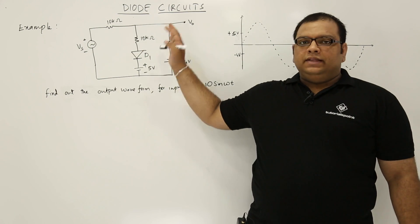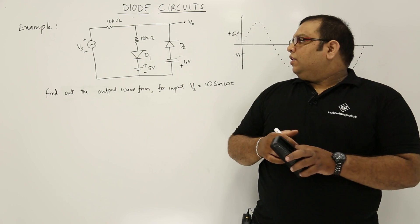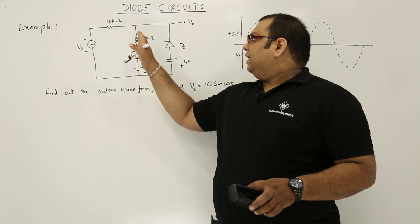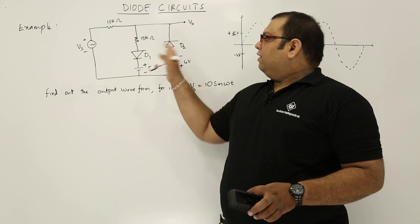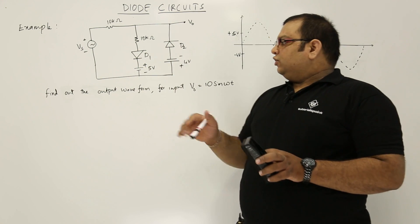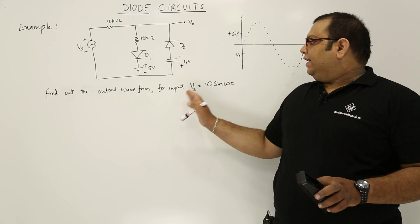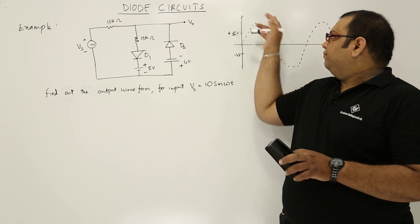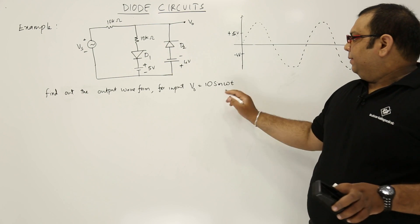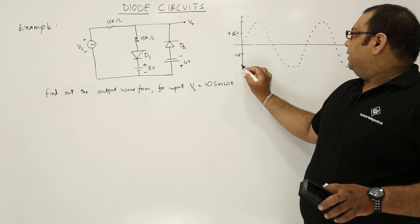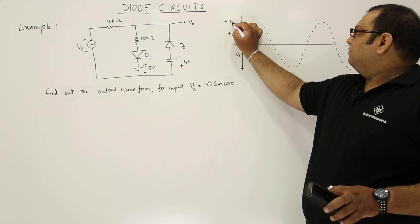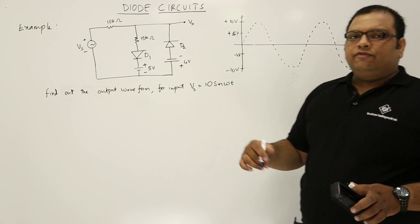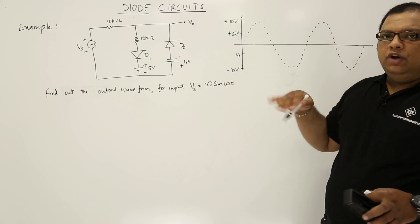Let us discuss an example in clipper circuits. In this example we have a combination of transmission clipper and power supply with resistances, and we have diodes D1 and D2. The question is: find out the output waveform when the input Vs = 10sin(ωt). This is a sinusoidal waveform and the peak-to-peak input voltage is +10V to -10V. We need to find out how the output waveform will look.